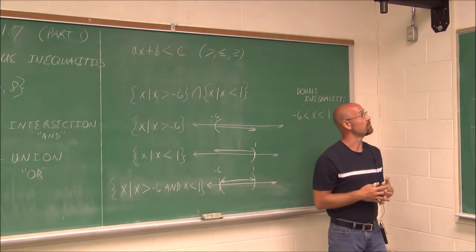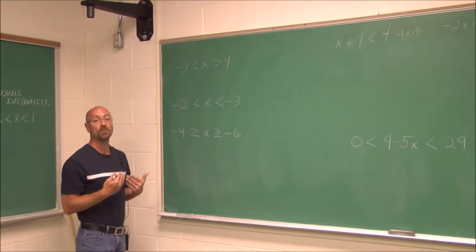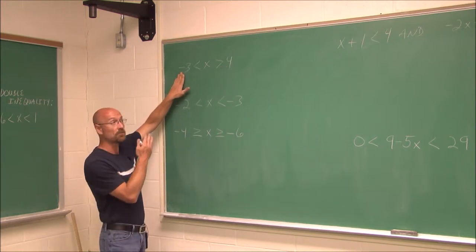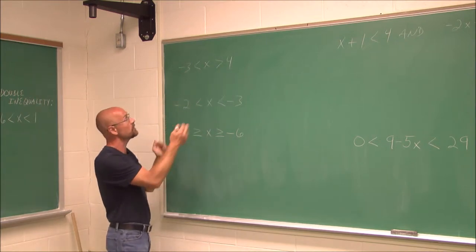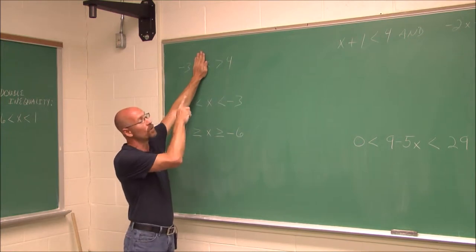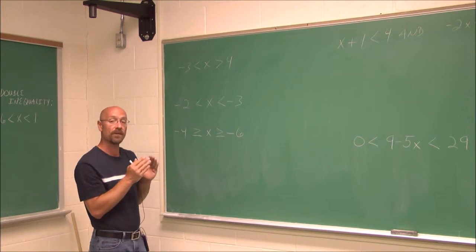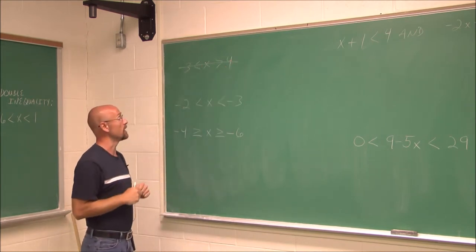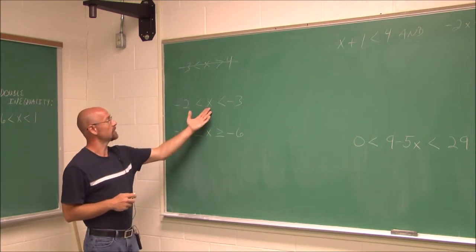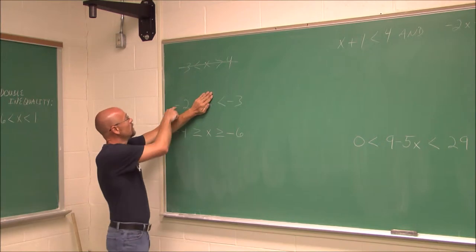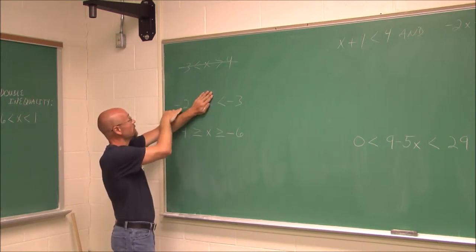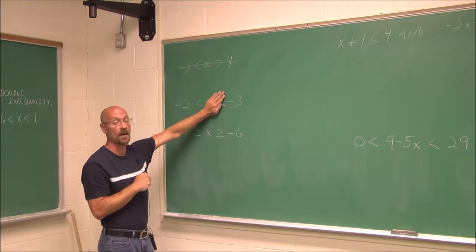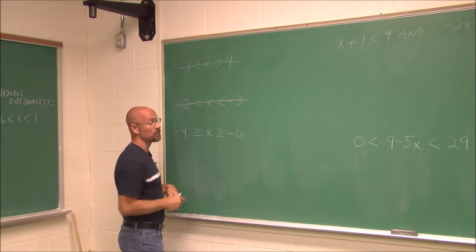Let's check a few examples to see if double inequalities are in the proper format. First, negative 3 is less than X and X is greater than 4. The values run from smallest to greatest, but if I cover up the middle, it asks: is negative 3 greater than 4? No — that's not true, so it's not in proper format. Second example: negative 2 is less than X and X is less than negative 3. Negative 2 is not less than negative 3, so that's also not in proper format.